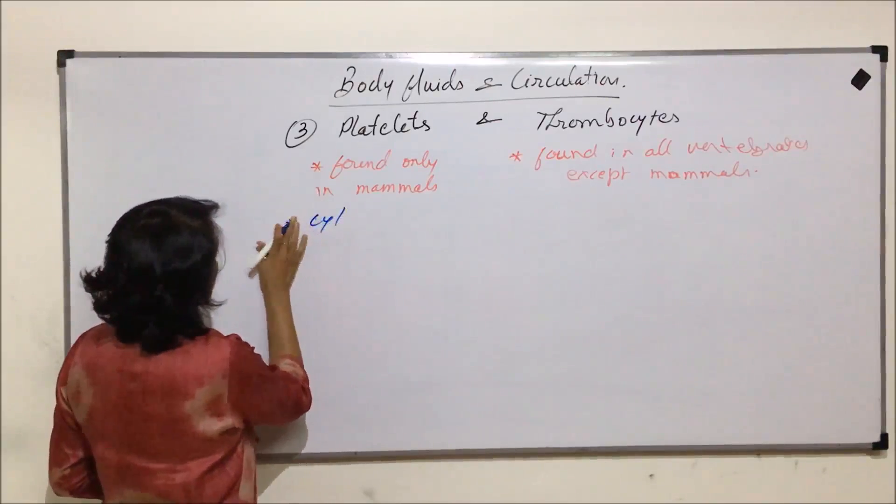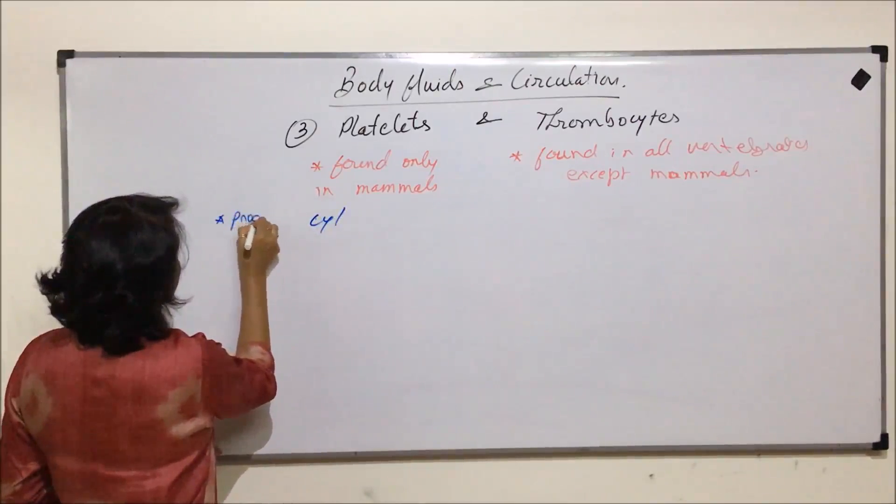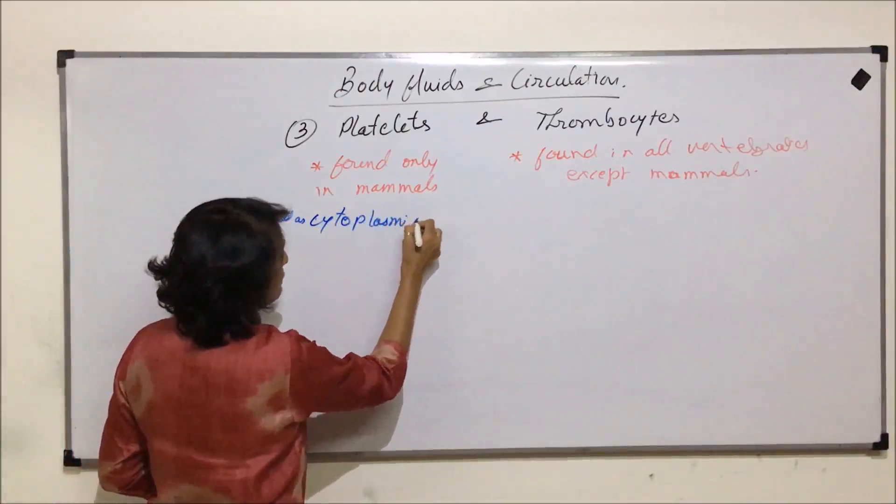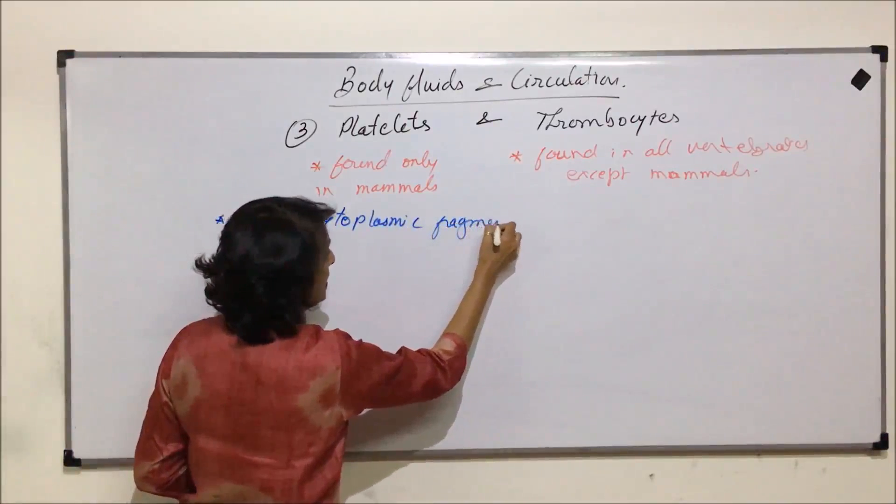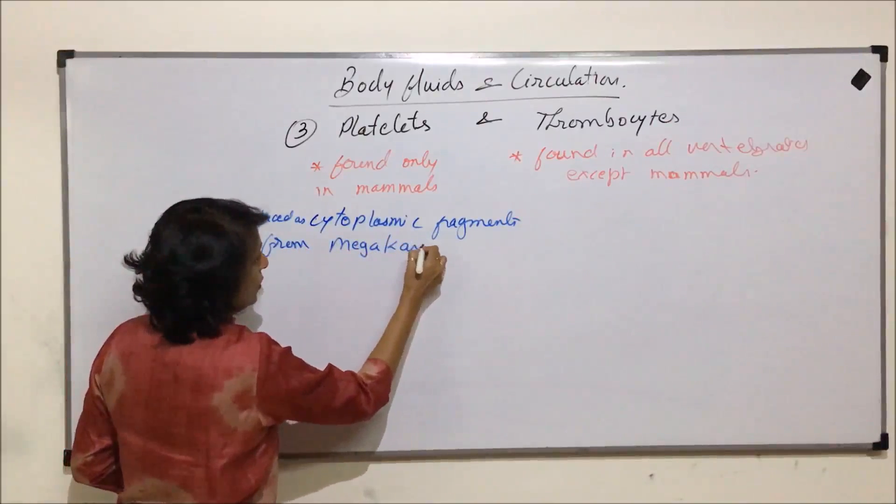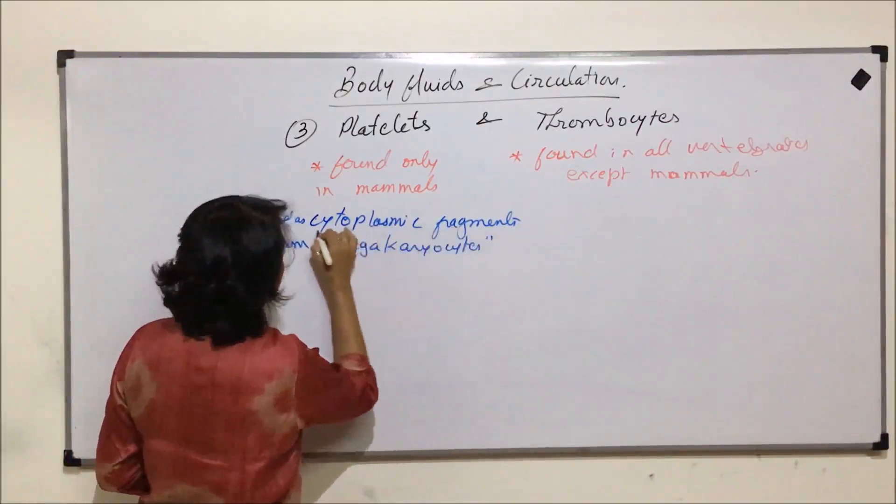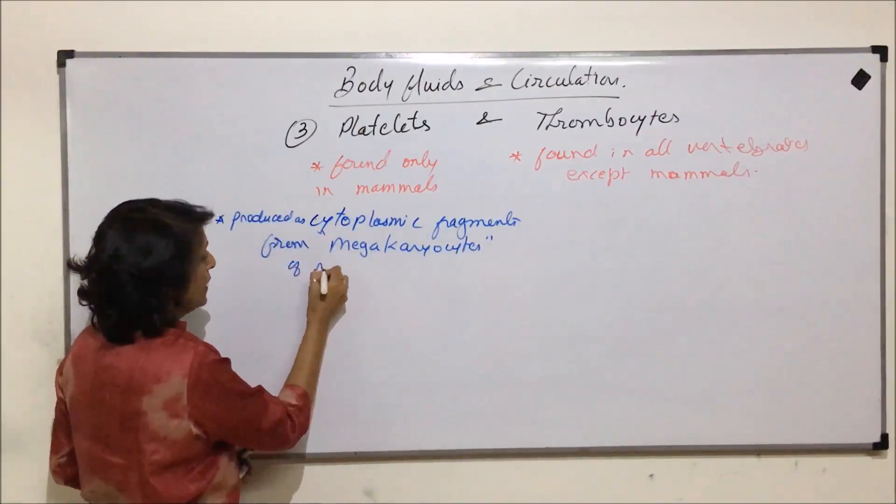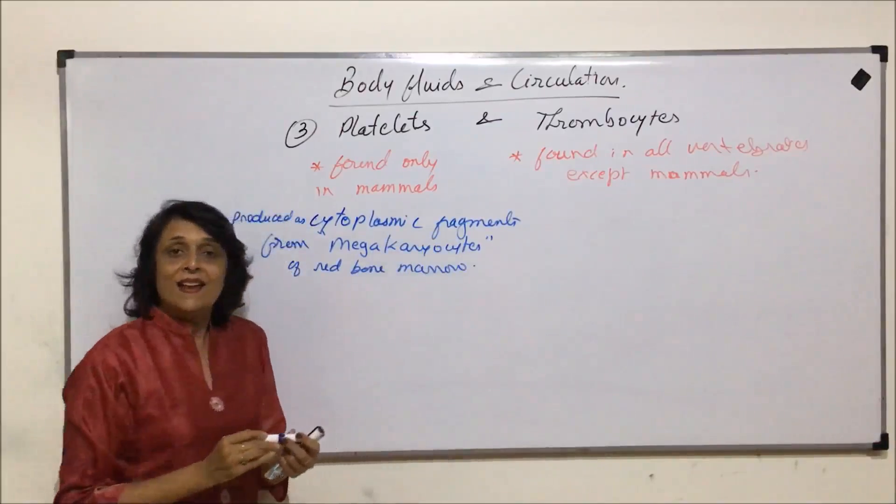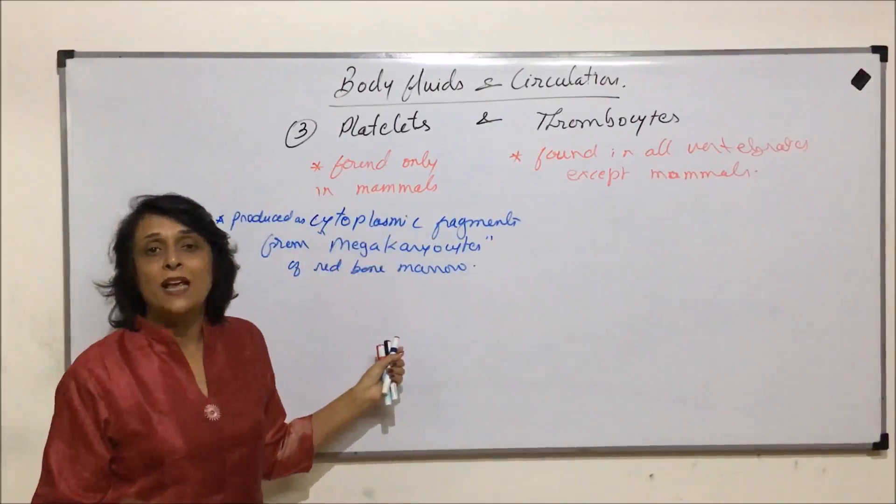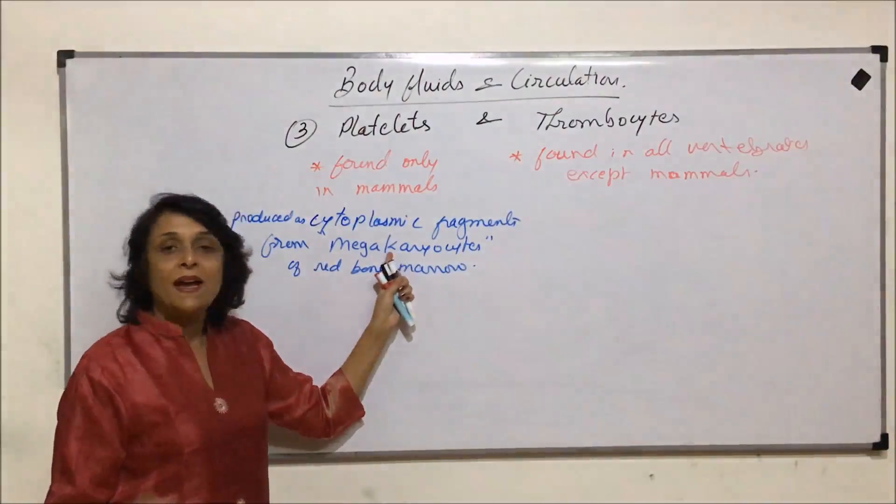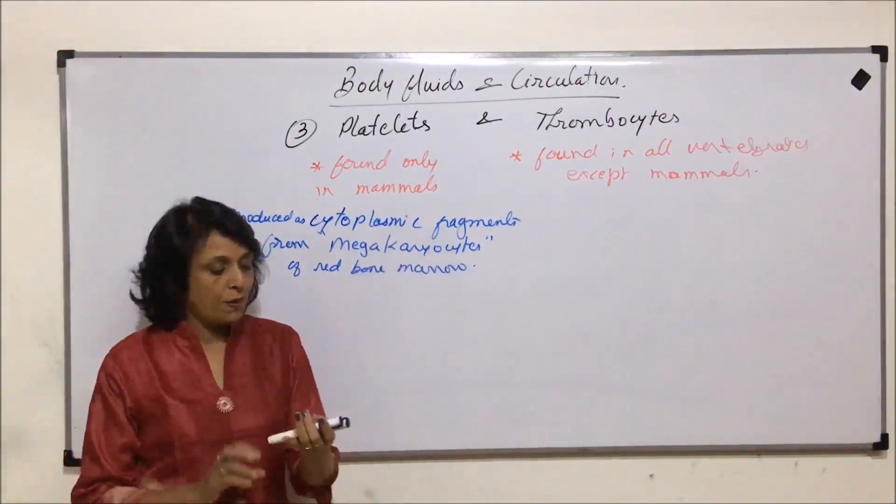So we can write: produced as cytoplasmic fragments from megakaryocytes, and these megakaryocytes are found in bone marrow of red bone marrow. These platelets are cytoplasmic fragments, that means they break off only the cytoplasmic content of the megakaryocyte to form these platelets.